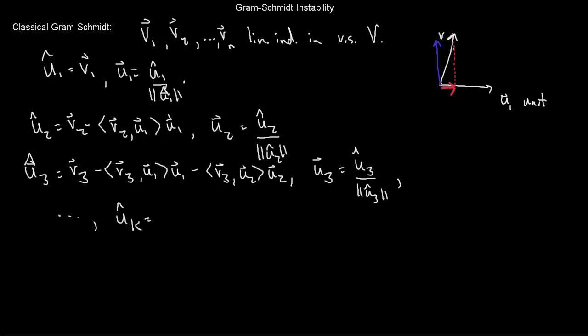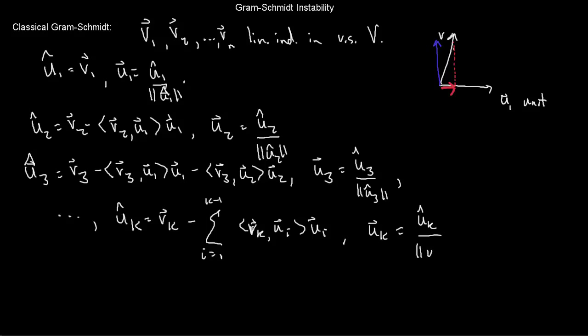I continue in this fashion until the end. At the k-th step, I define ûk to be vk minus the sum of orthogonal projections of vk onto ui, where i ranges from 1 to k−1 — all of the previously created orthogonal basis vectors. Then uk will be the normalized version of ûk. At the end of the day, I will have started with some independent vectors and gotten an orthonormal basis. Here k ranges from 1 to n.